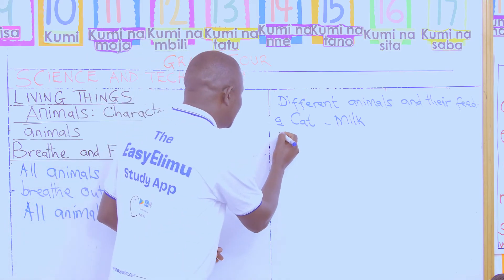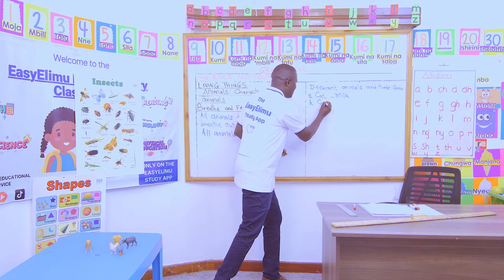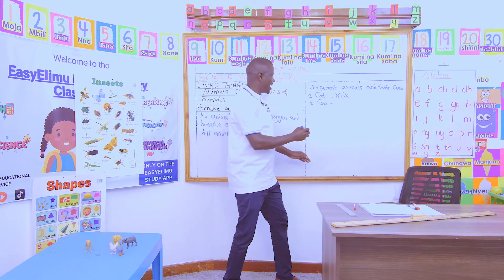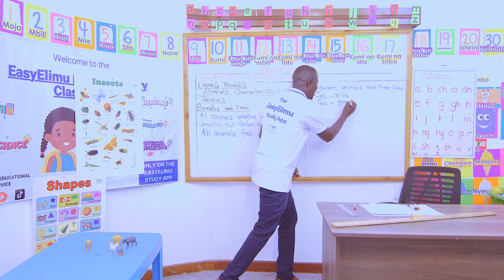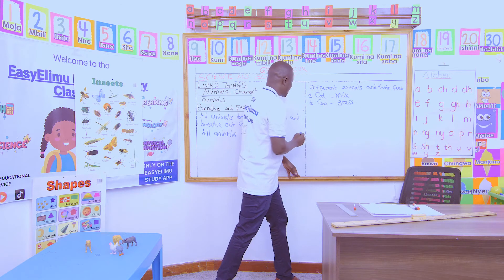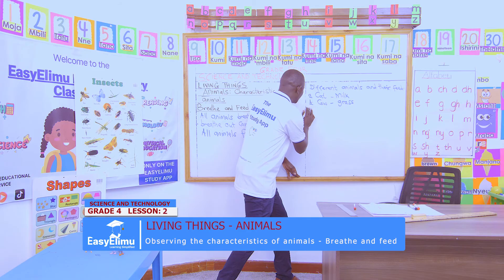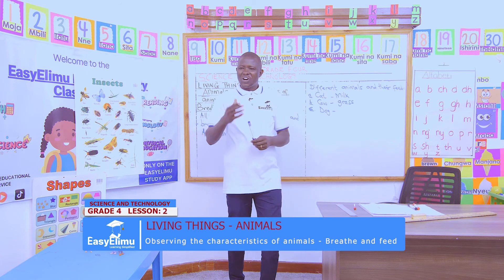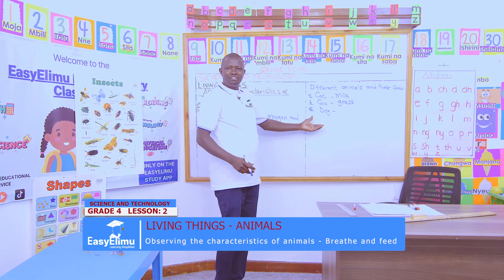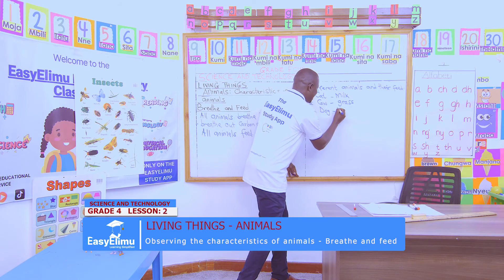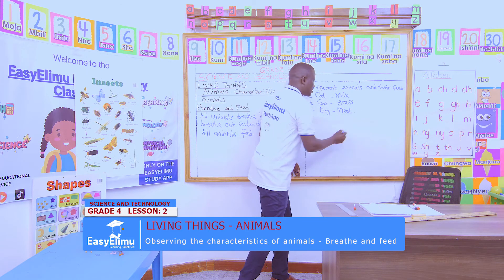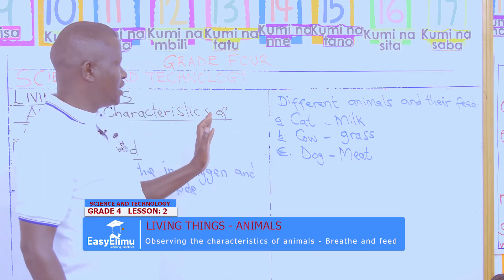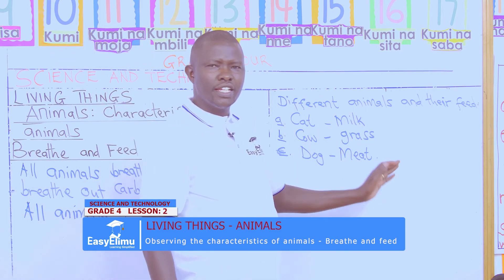For example, a cow — yes, Esther, what does a cow feed on? A cow feeds on grass. Correct, a cow will feed on grass. What about the dog? John, what does a dog feed on? A dog feeds on meat. Correct, it has to feed on meat. From the simple animals we have mentioned here in our groups, we've seen different animals feeding on different types of food.